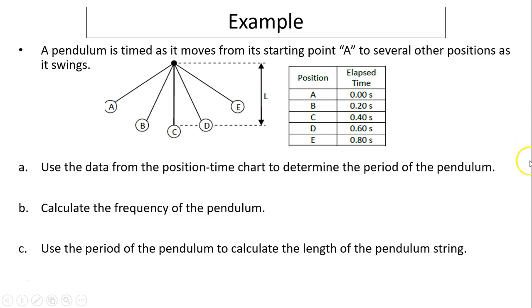Another example. A pendulum is timed as it moves from its starting point A to several other positions as it swings. Here is the chart, position and time. Use the data from the position time chart to determine the period of the pendulum. The period is from one extreme, go to the other side, and coming back. So from A to E is 0.8 seconds, coming back another 0.8 seconds. So the period is 1.6 seconds.